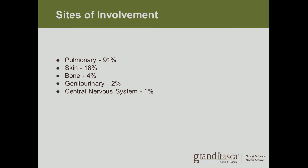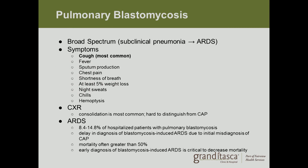Pulmonary blastomycosis presents across a broad spectrum, from subclinical pneumonia to respiratory distress syndrome. The most common symptom is cough, but others include fever, sputum production, chest pain, shortness of breath, weight loss, night sweats, chills, and hemoptysis — or coughing up blood. On a chest x-ray, the most common finding is a consolidation, and it is hard to distinguish from a community-acquired pneumonia.